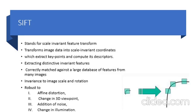A corner may not be a corner if the image is scaled. For example, check a simple image here. A corner in a small image within a small window is flat when it is zoomed in the same window.